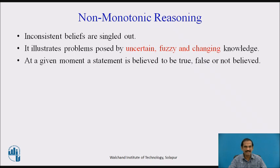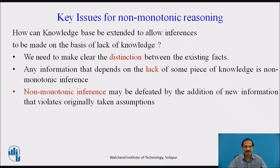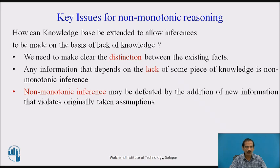At a given moment, a statement is believed to be true, false, or not believed at all. The key issues for non-monotonic reasoning are: first, we need to make a clear distinction between existing facts supplied to us. Any information that depends on the lack of some piece of knowledge is a non-monotonic inference. Non-monotonic inferences may be defeated by the addition of new information that violates originally taken assumptions. Therefore, we may have to redo our assumptions to continue reasoning.